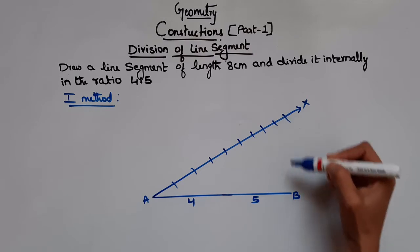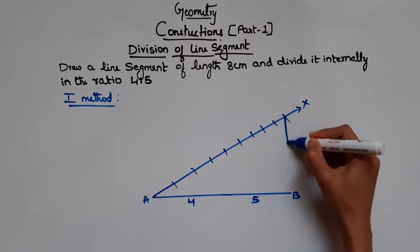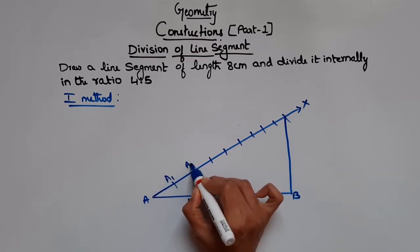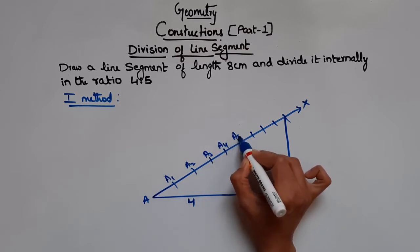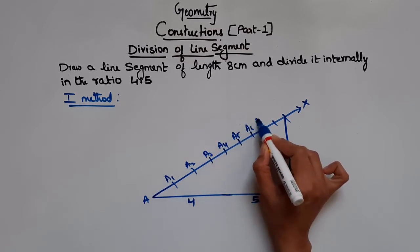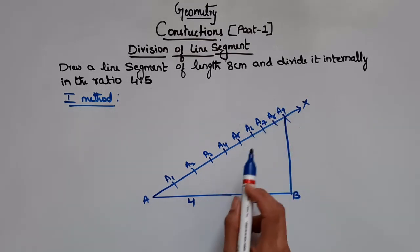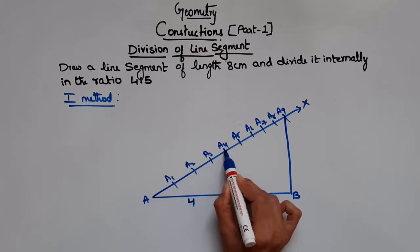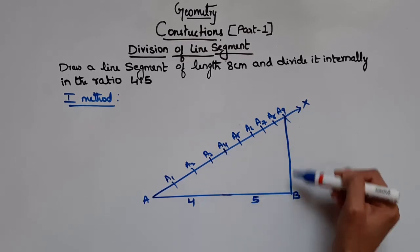Repeat until you have 9 parts: 1, 2, 3, 4, 5, 6, 7, 8, and 9. Now join the 9th point with point B. Let's name the points A1, A2, A3, A4, A5, A6, A7, A8, and A9. We want the ratio 4 is to 5, so we need the 4th point — that is A4.